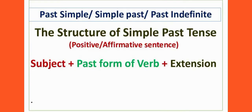Past simple, simple past, or past indefinite — these all refer to the same thing. The structure of past simple tense is: subject plus past form of verb plus extension. In this video clip we have shown positive, that means affirmative sentences. So this structure is for simple past affirmative sentences only.